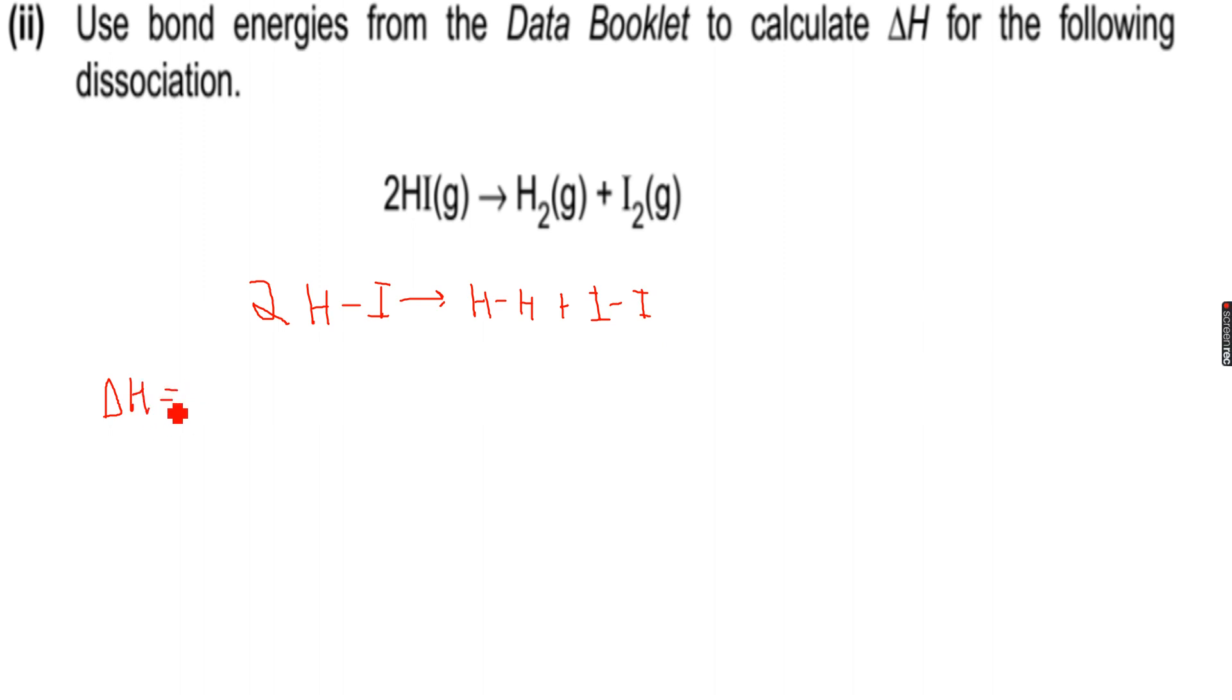So delta H not r, which is delta H for the reaction here, is equal to 2 times... 2HI minus H-H plus I-I, which is equal to 2 times, I have to check the data, so 299 minus...